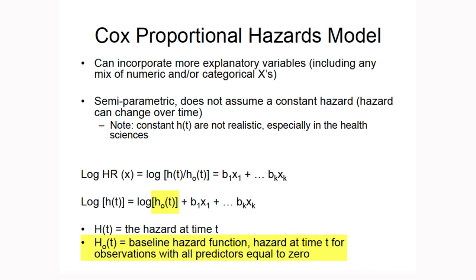Because we don't know what the baseline hazard is, we can't plug our regression output values into the formula to calculate someone's hazard of an event at a particular time. This is in contrast to previous models: with linear regression we could estimate the mean y, with logistic regression we could estimate the odds or probability, and with Poisson regression we could estimate the rate. But with Cox regression, we can't estimate the hazard at a given time because we don't know the baseline hazard. What we can do is estimate hazard ratios from our coefficients in order to compare hazards between groups.